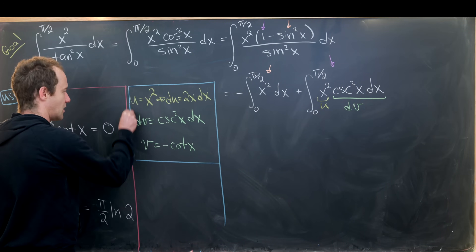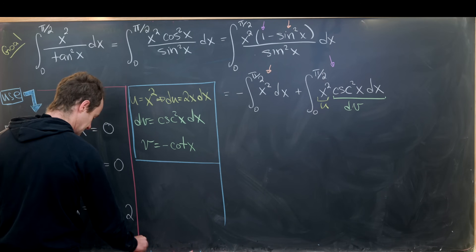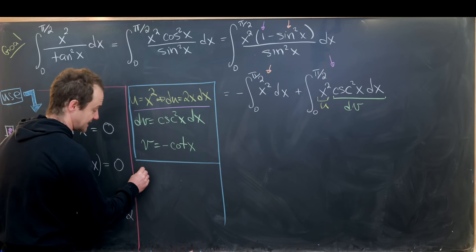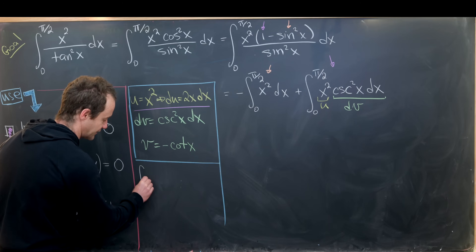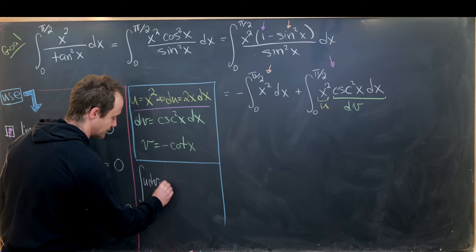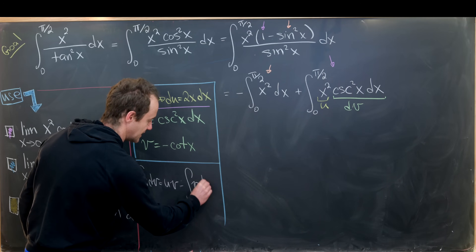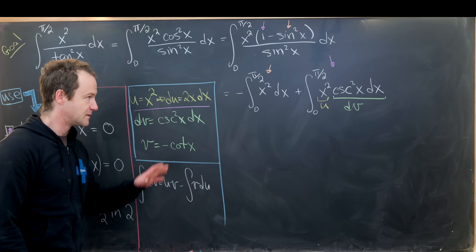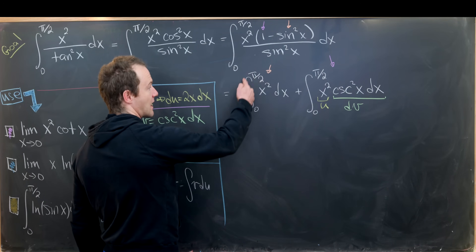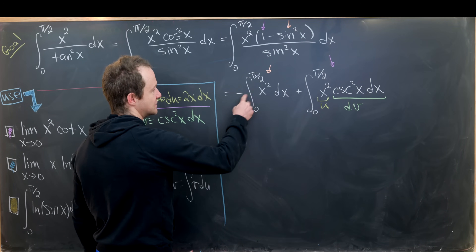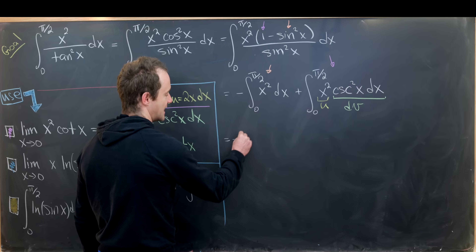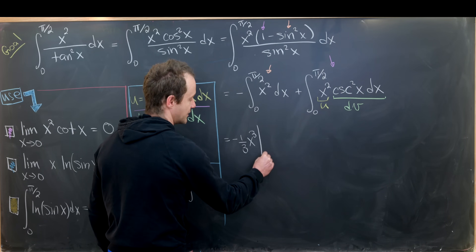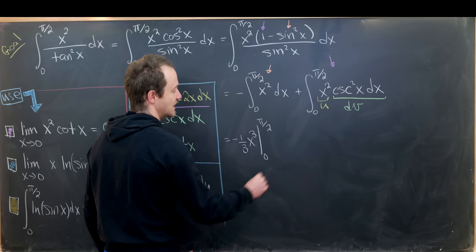Applying the standard integration by parts formula ∫u dv = uv − ∫v du, the first simple integral simplifies to −(1/3)x³ evaluated from 0 to π/2. Then u times v gives x²·(−cot x).